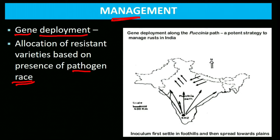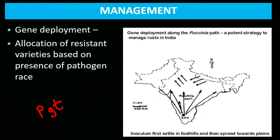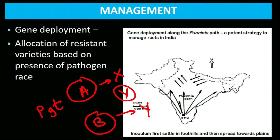A pathogen race is a group of pathogens that can infect a specific set of host varieties. For example, Puccinia graminis race A infects host variety X but not Y; race B infects variety Y but not X. For management: where race A is present, grow variety Y; where race B is present, grow variety X. First survey which race is present in which region, then release resistant varieties accordingly.